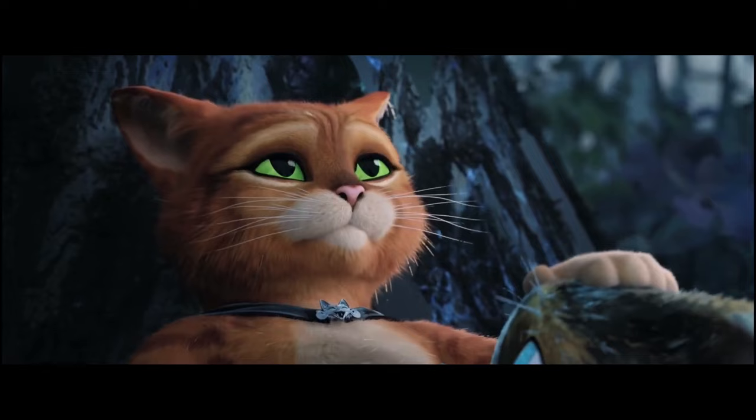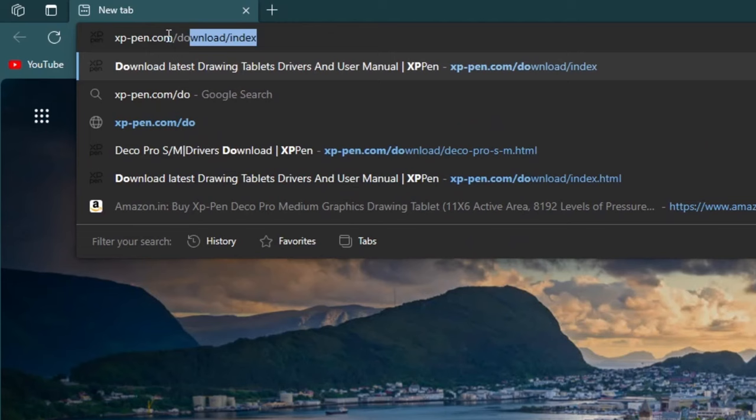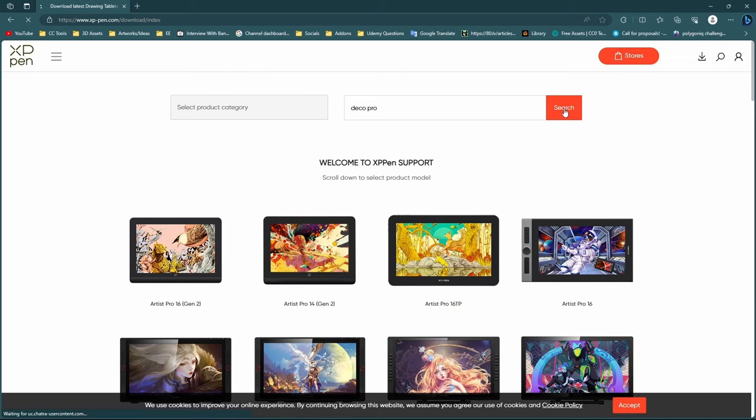Then go to the website xppen.com/download/index. I put the links down in the description box below. Then search for your graphics tablet, then download and install the driver. After installing the driver you can customize all the shortcut keys to your liking.